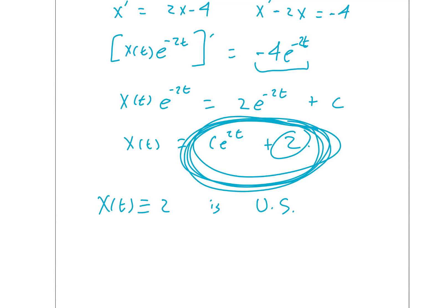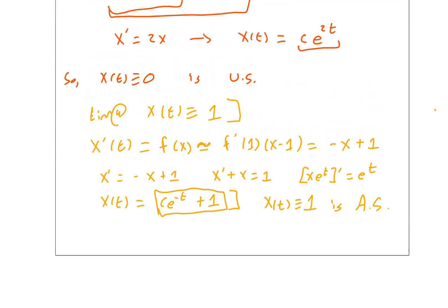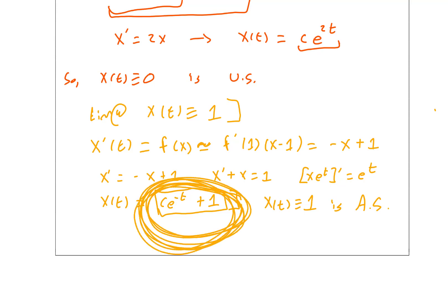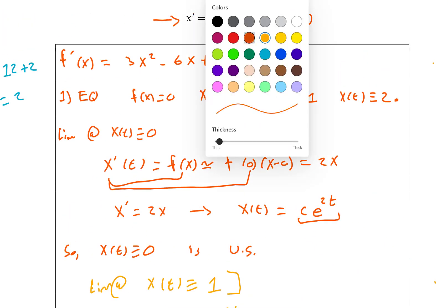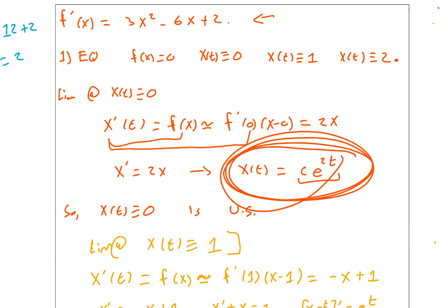To summarize: if X starts near 1, it is approximately c e to the minus t plus 1, which gets closer and closer to 1 as t goes to infinity, so X of t equals 1 is asymptotically stable. If X starts near 0 or near 2, it is approximately c e to the 2t or c e to the 2t plus 2 respectively — both grow away from the equilibrium — so X of t equals 0 and X of t equals 2 are both unstable.